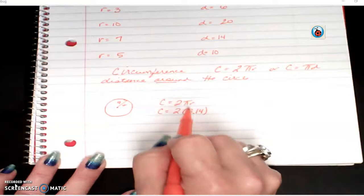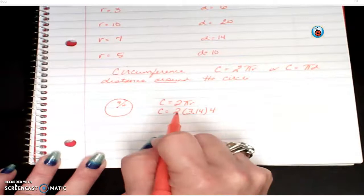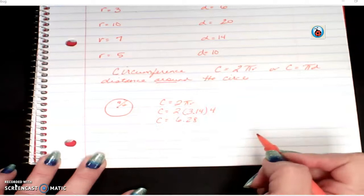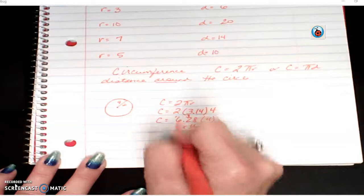In this case now, the radius is going to be 4. So I would do 2 times 3.14, which would be 6.28, and now times that by 4. Well, if I put a 4 here, 8 times 4 is 32, 8 plus 3 is 11, 24 plus 1 is 25.